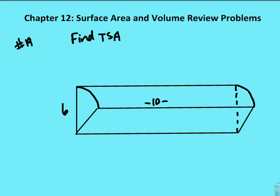So the first question, number 19, asks us to find the total surface area of this slice of a cylinder. TSA stands for total surface area. I know that this length here, which is really the radius of my cylinder, is 6, and then the height here is 10.